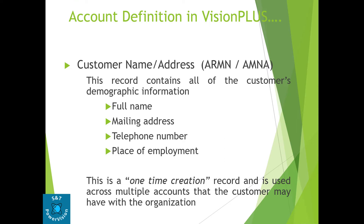The customer name and address record is used across multiple accounts that the customer may have with the organization. It may happen that for a particular customer, they have applied for more than one product. The customer number will be the same, but for each product they have a separate account number. To link the customer number with different account numbers, we use the relationship number. If your bank has only one card, the relationship number and account number may be the same.